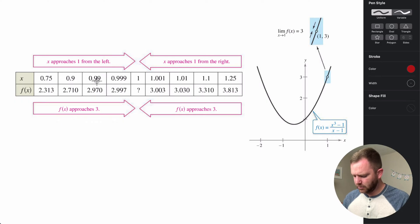As our numbers are getting closer to 1, we can see that the y values are getting closer and closer to 3 in both directions. As x gets closer to 1 from the right, this is getting closer to 3. As x gets closer to 1 from the left, f(x) is getting closer to 3.